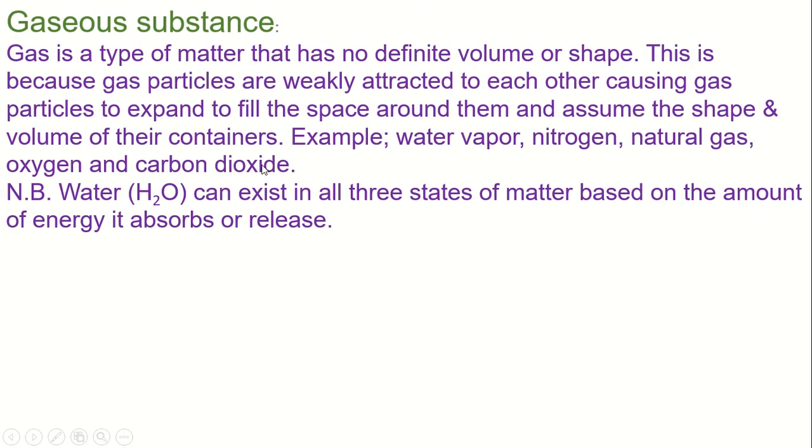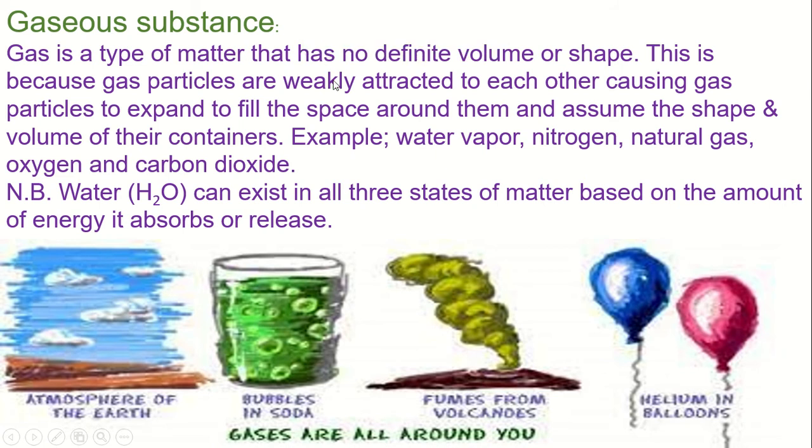Here are the examples of liquid substance. Let's study about gaseous substance. Gas is the type of matter that has no definite volume or shape. This is because gas particles are weakly attracted to each other, causing gas particles to expand to fill the space around them. Example: water vapor, nitrogen, natural gas, oxygen, carbon dioxide, etc.